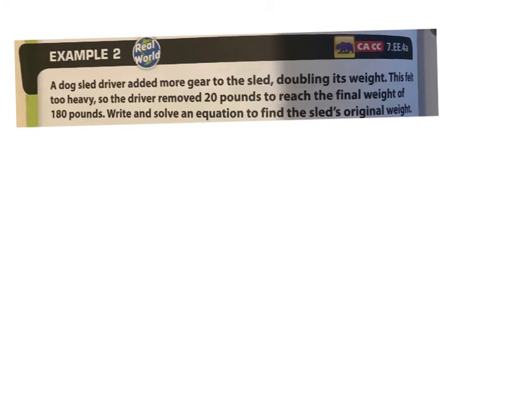So we're given this example 2. It's a word problem. And luckily in the last lesson you had a chance to really work on translating out of English and into math without even having to worry about solving the problem. And now we're going to add to that the solving of the problem. Our steps are always read it, underline the question, circle the information they gave you, draw what you need to draw to help your brain make sense of it, and then we'll write the equation. We have a dog sled driver added more gear to the sled, doubling its weight. This felt too heavy, so the driver removed 20 pounds to reach the final weight of 180 pounds. Write and solve an equation to find the sled's original weight.